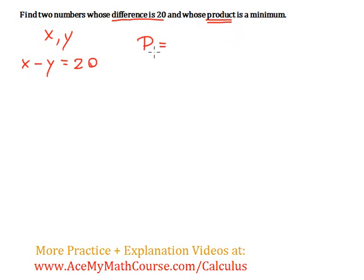I'm going to call the product P, and what is the product of x and y? Just x times y. The product is when we multiply things, of course.